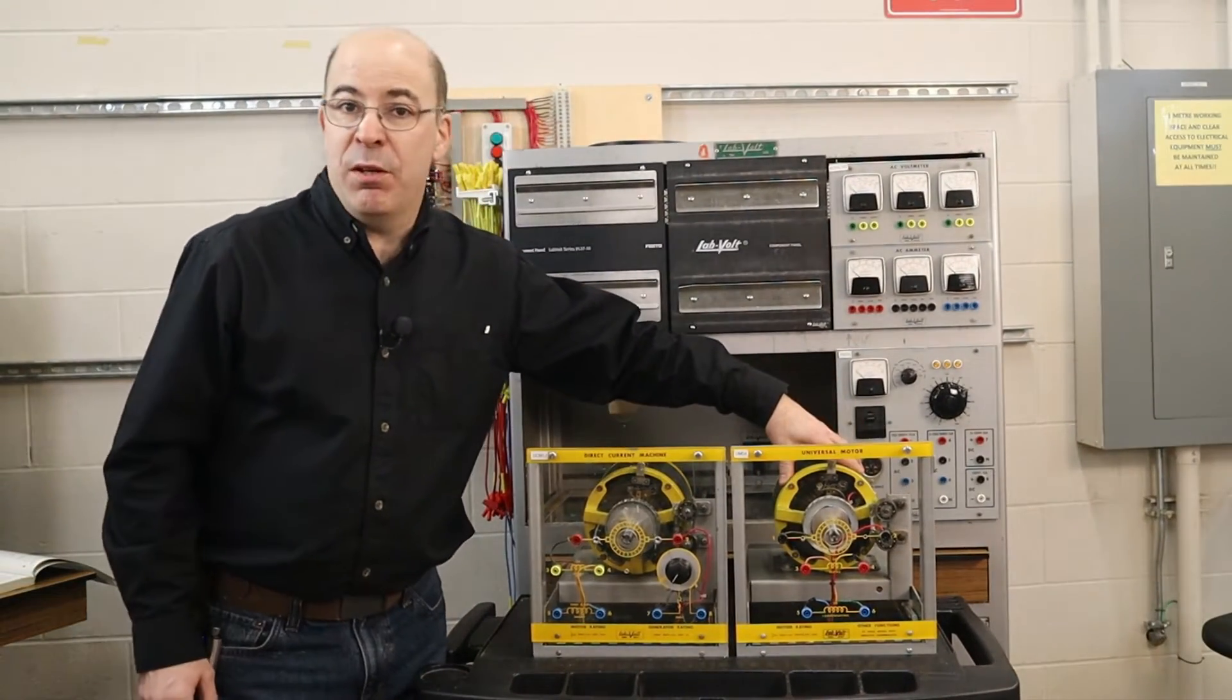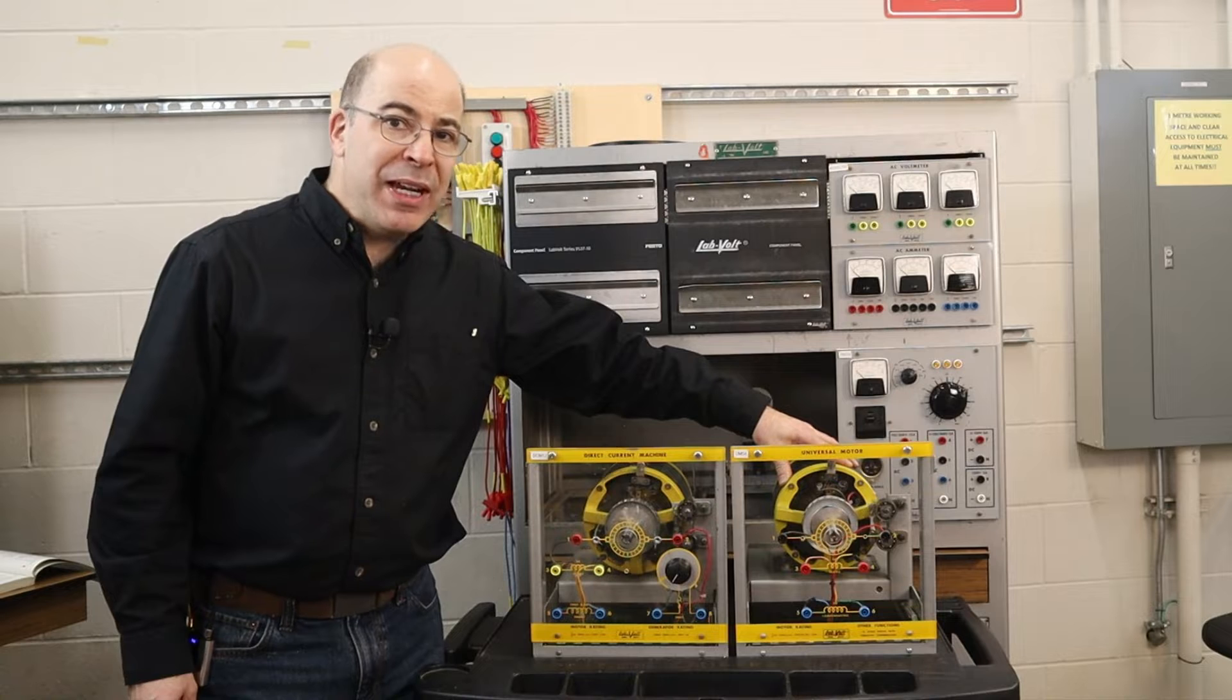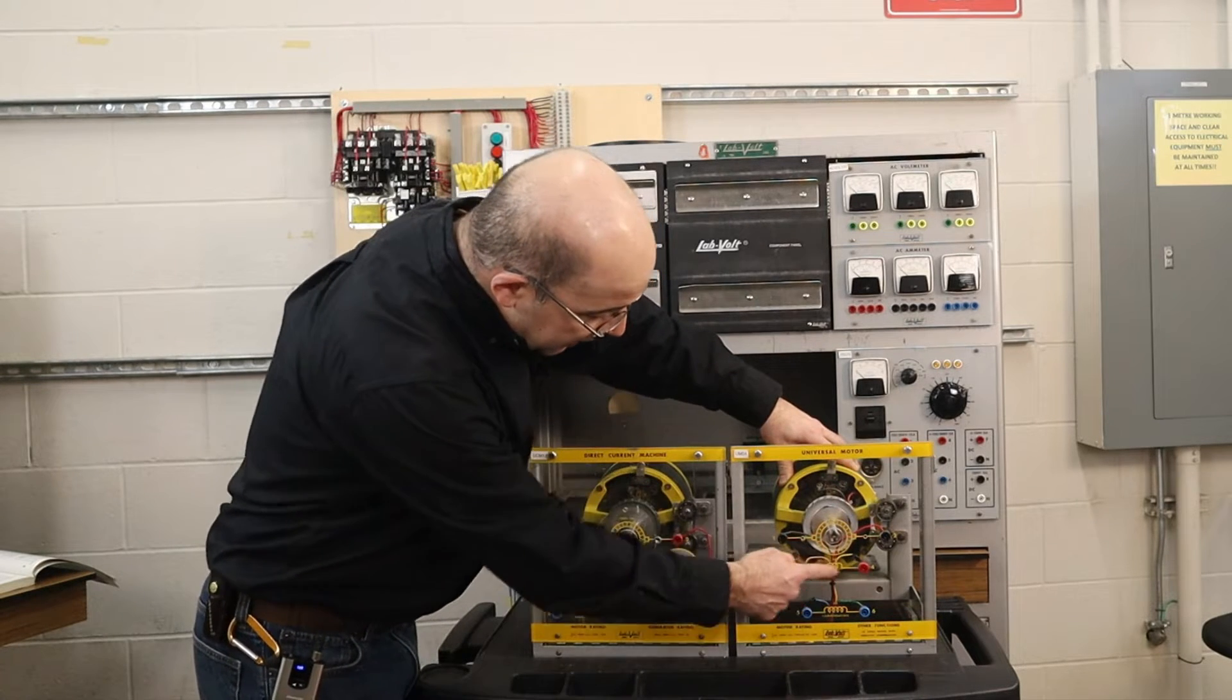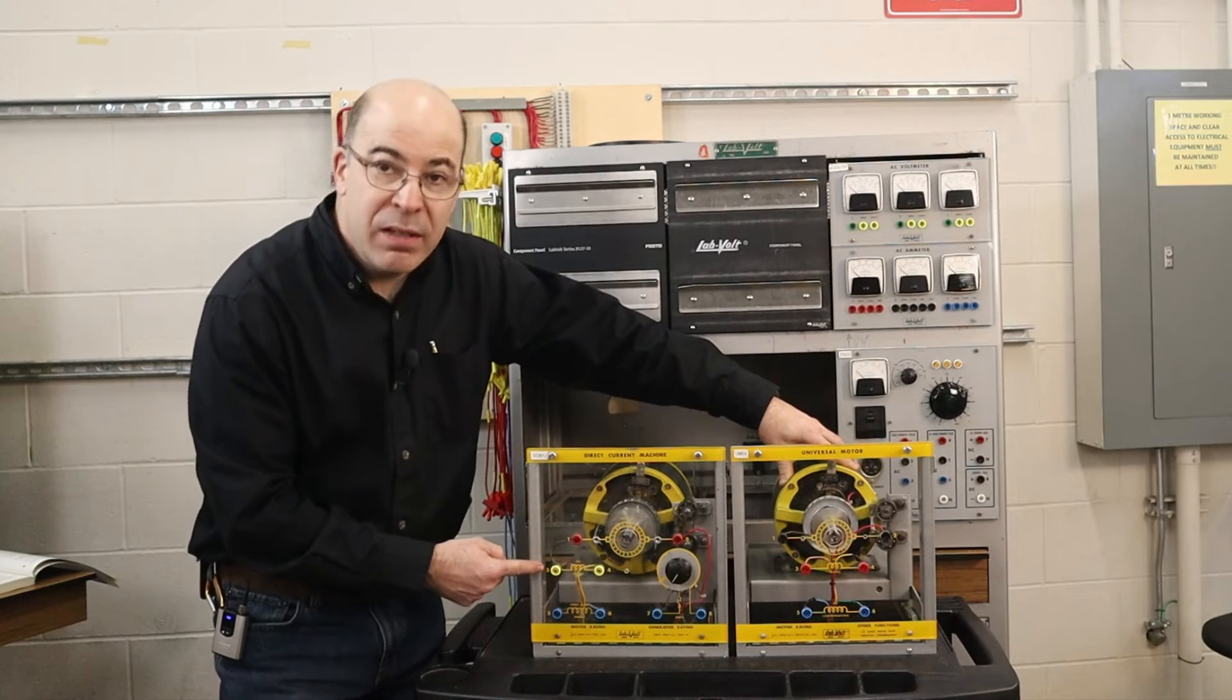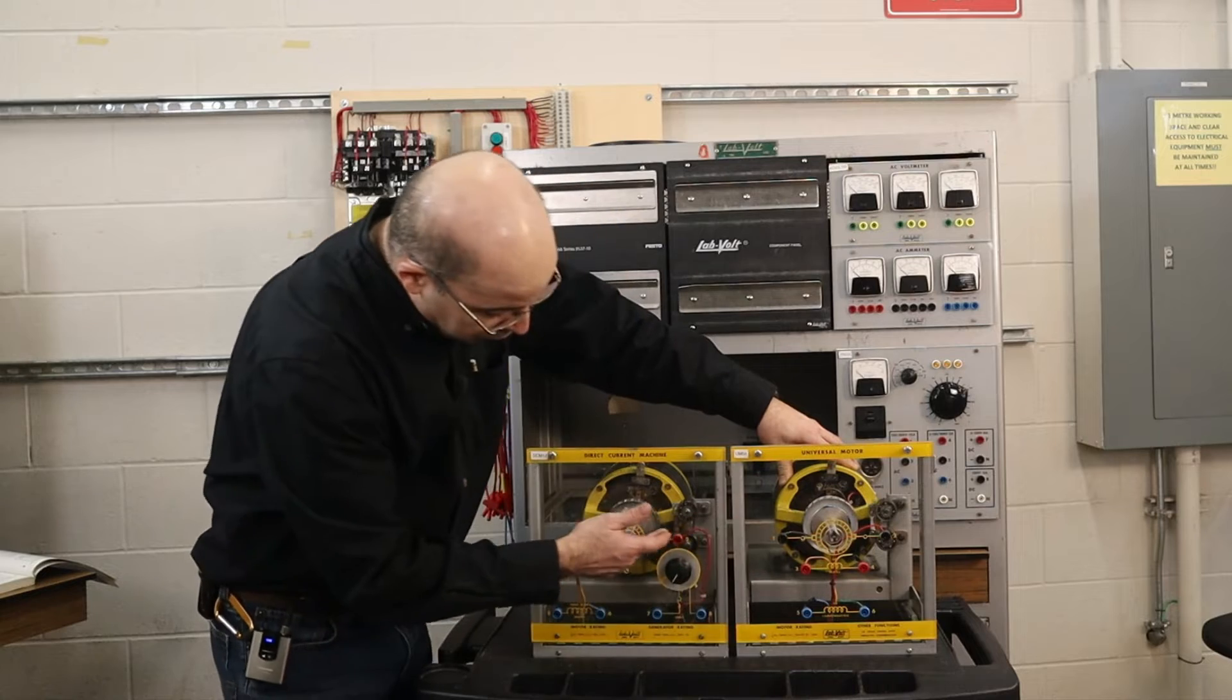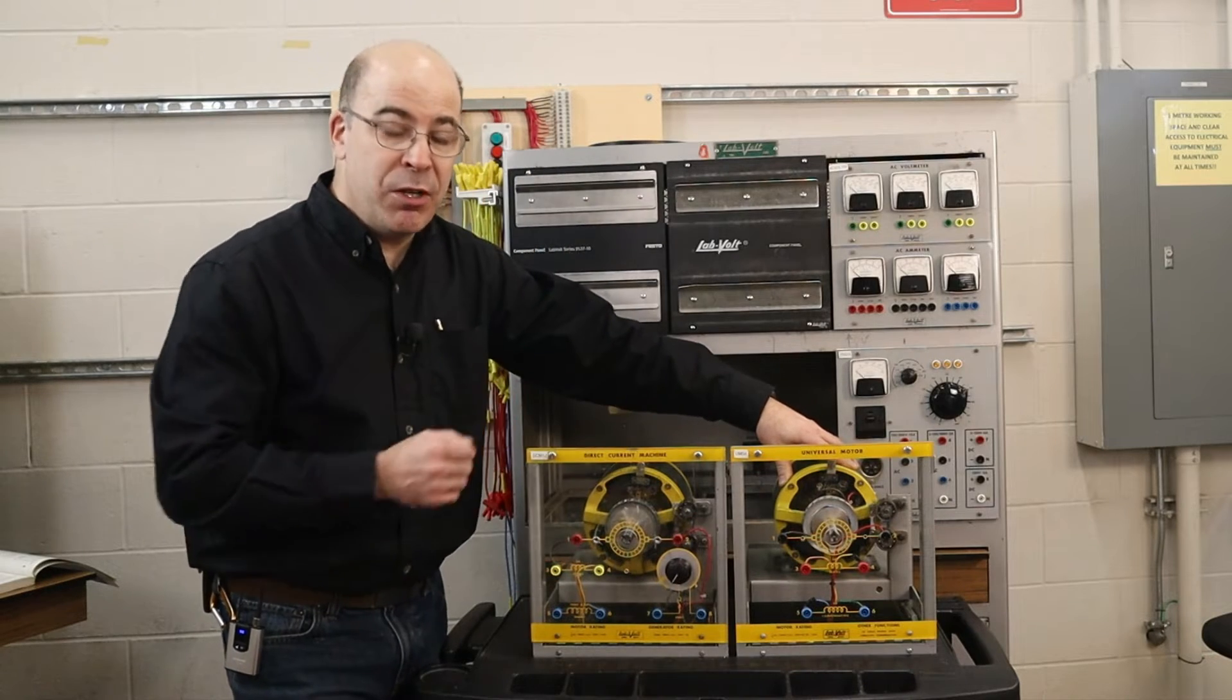The universal motor is also known as an alternating current series motor. What we can see is that it has a series field just like the DC machine, it has an armature just like the DC machine, and it has brushes.